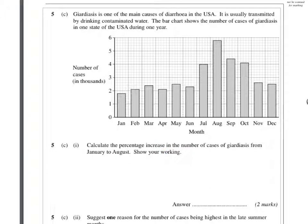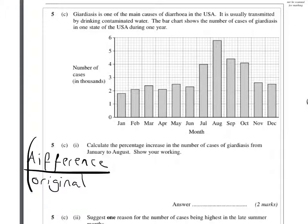So with any percentage change question, what you need to do is get the difference, divide it by the original, and multiply that by 100.